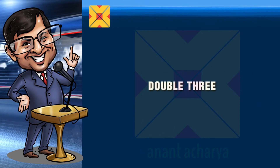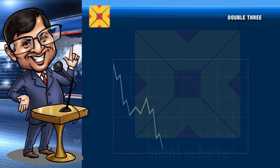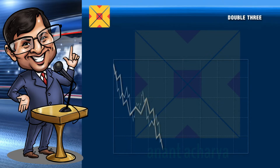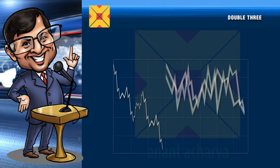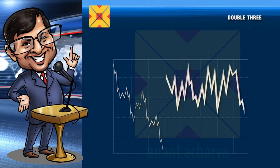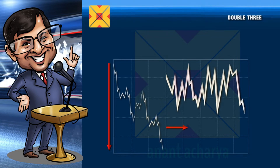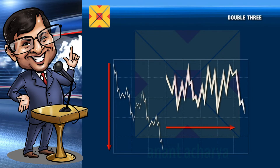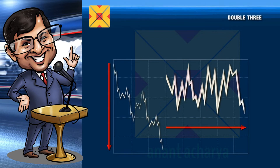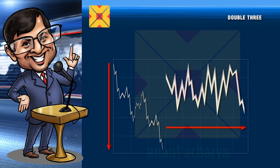Just as the zigzag transforms or morphs into a double zigzag, the flat pattern transforms into a double three. While the double zigzag achieves a deeper retracement, the double three brings about a sideways movement in a greater period of time. Double threes appear especially when markets are in a waiting mode and biding time for some news.